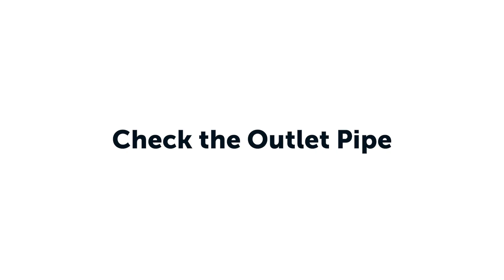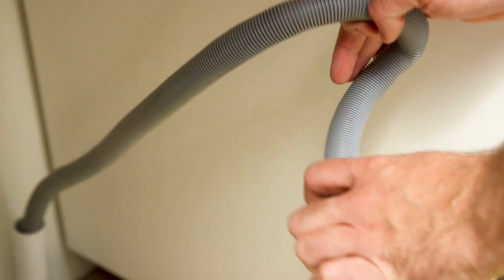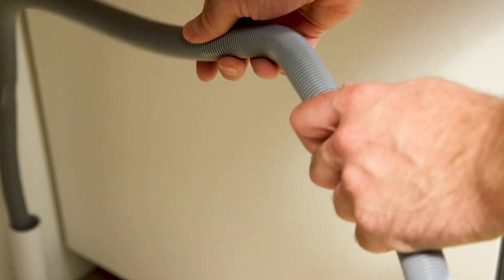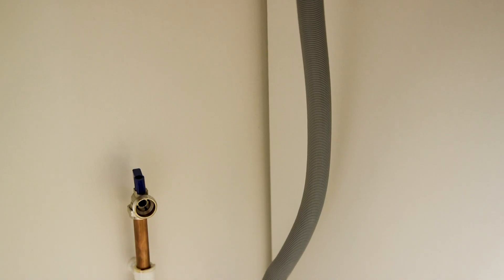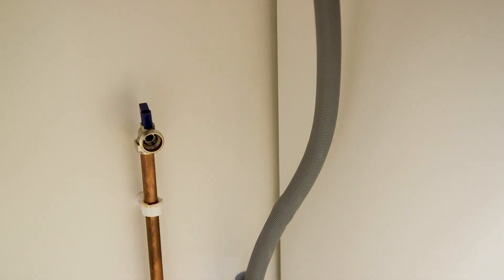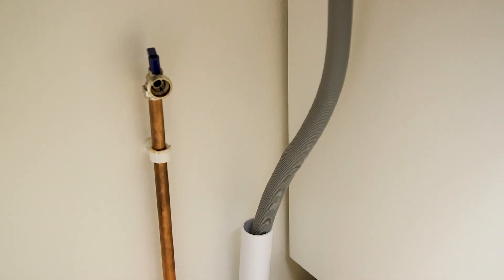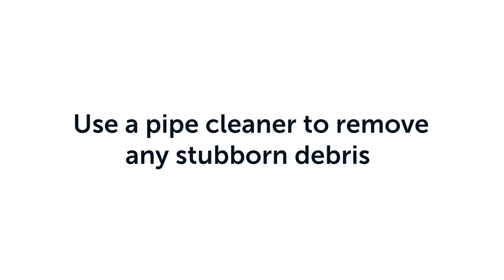Check the outlet pipe for any blockages, kinks or bends. Inspect the outlet pipe for any obvious bends. If using a standpipe, check that the pipe is not going too high and creating a steep incline. Use a pipe cleaner in the outlet pipe to remove any stubborn debris.